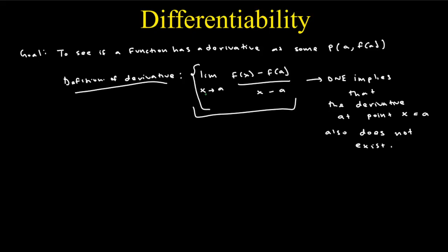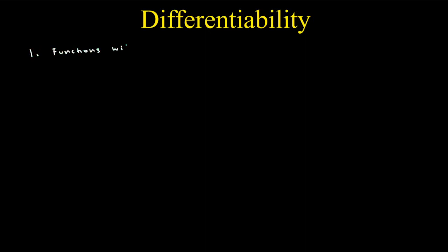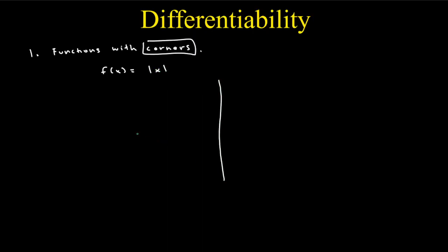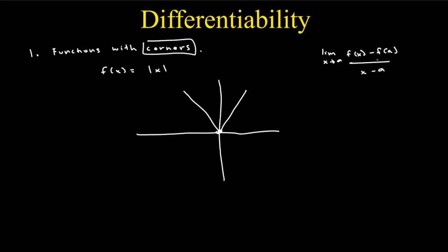Our first class of functions that have points where the derivative doesn't exist is functions with corners. For example, imagine f of x is equal to the absolute value of x. When we graph that out, we're going to get a V-shaped function with its vertex at (0, 0). Going back to the definition of the derivative — limit as x tends to a of f of x minus f of a divided by x minus a — what this is essentially doing is anchoring at a point a and finding the tangent line at that point.